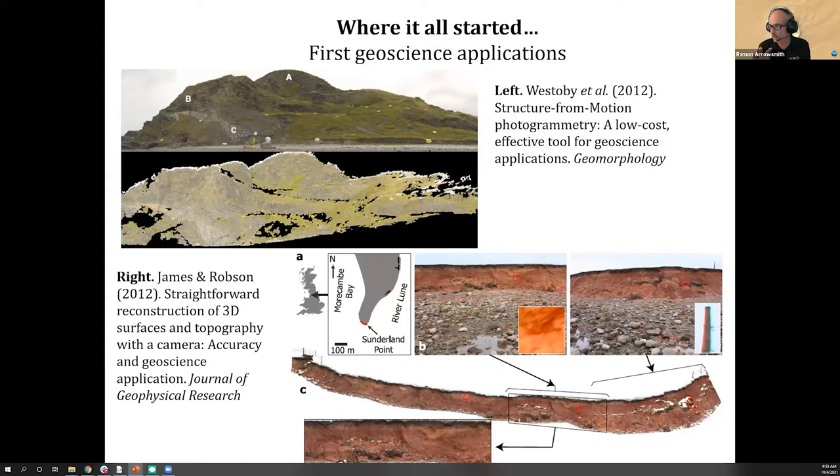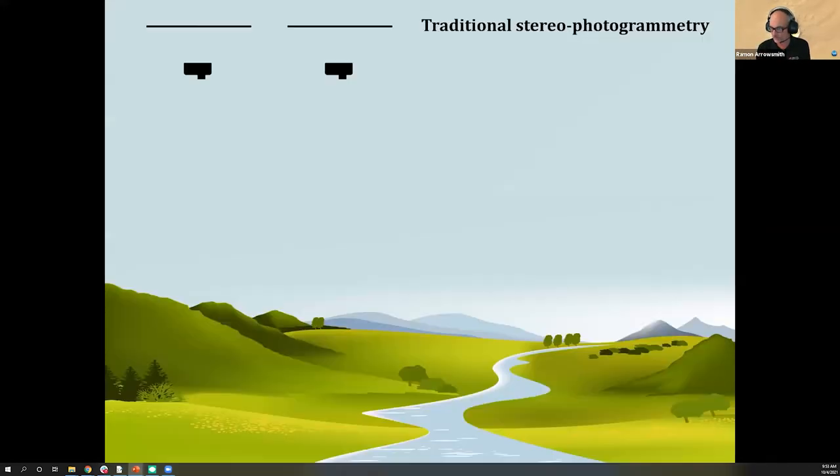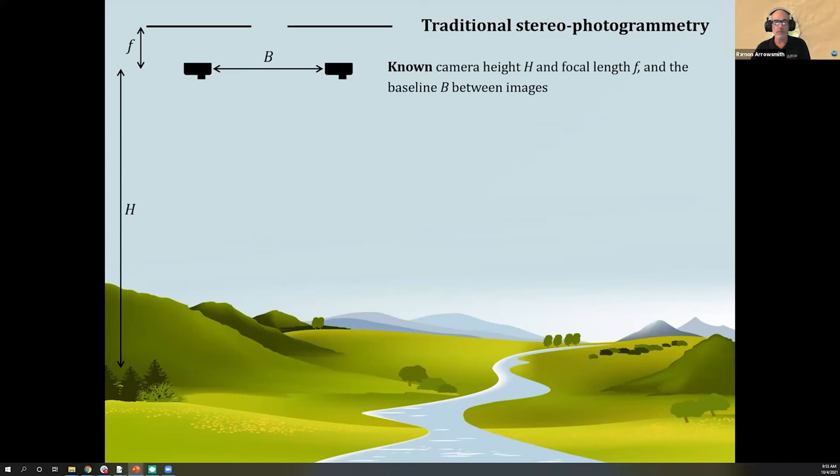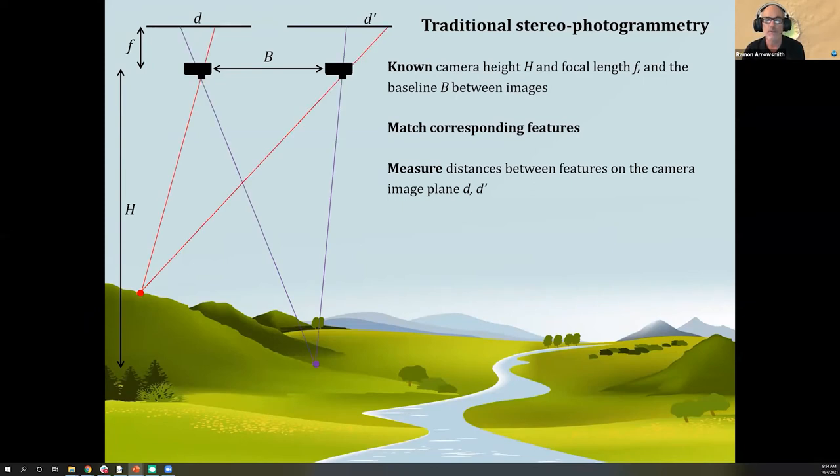Traditional stereophotogrammetry - many people are aware of how the US Geological Survey mapped much of the world using traditional photogrammetry with aircraft platforms taking pictures in a really uniform way. This traditional approach requires a bunch of information, but with that information it gives really accurate results. The key things that have to be known are the distance between each picture, the height from the ground, and something about the focal length. Then we match corresponding features and we can measure this D, this displacement on the camera plane, and start to build a 3D model.